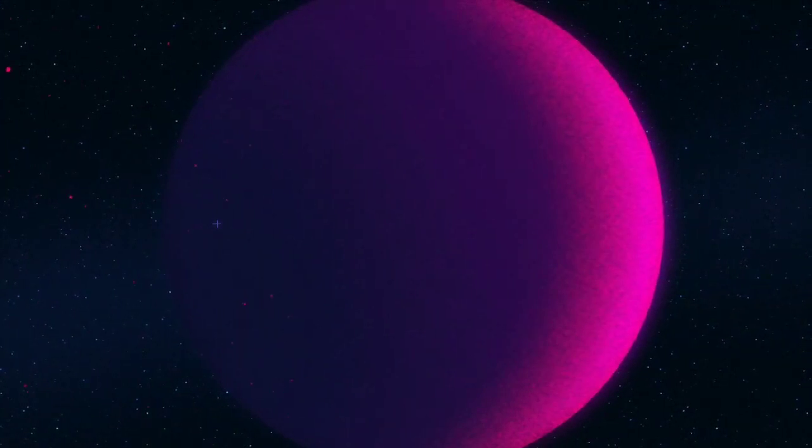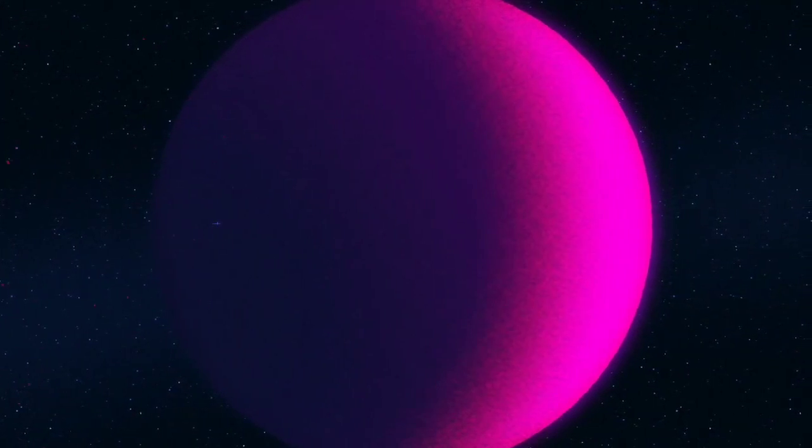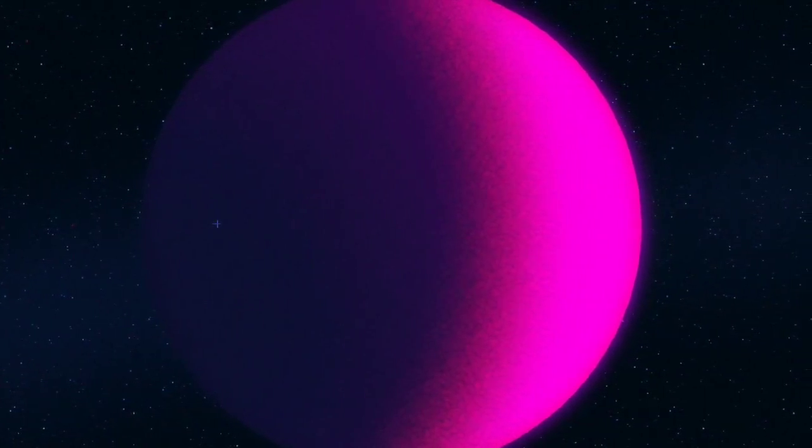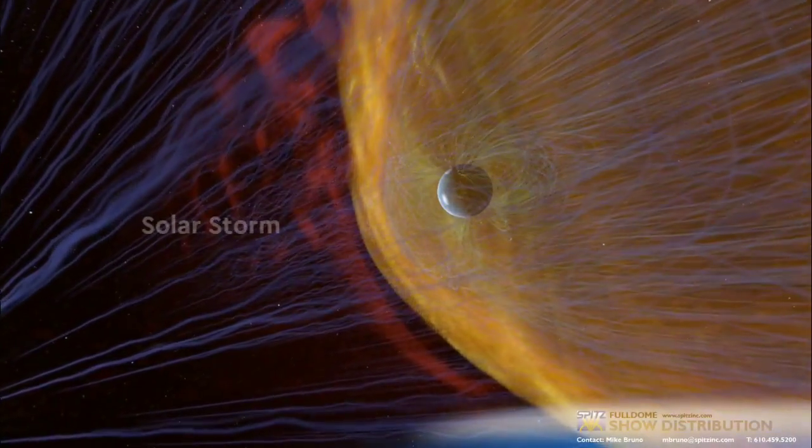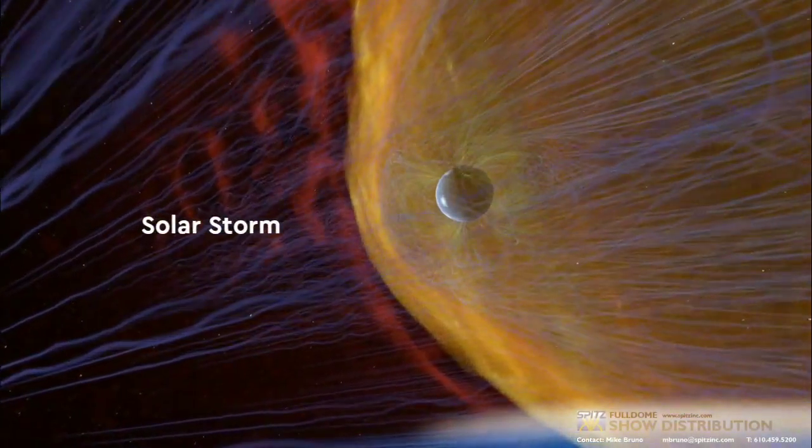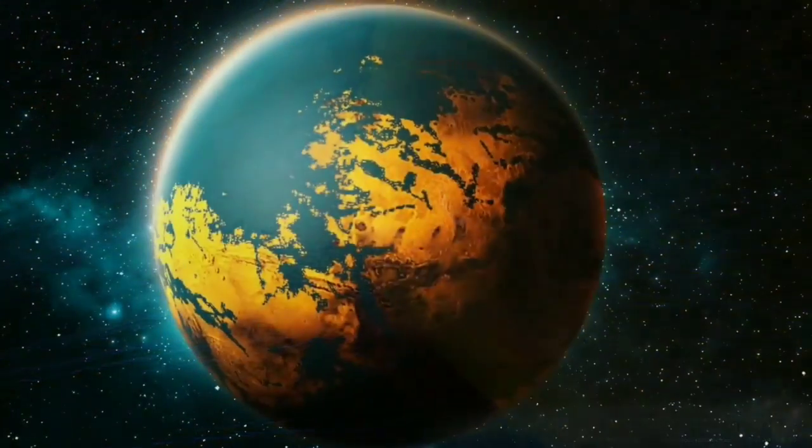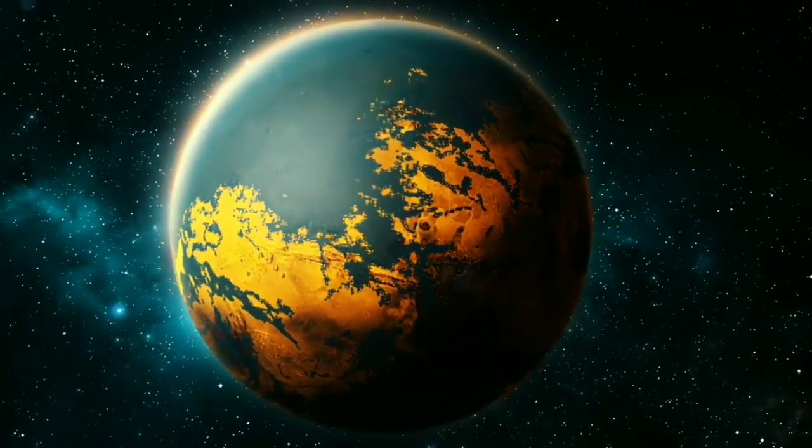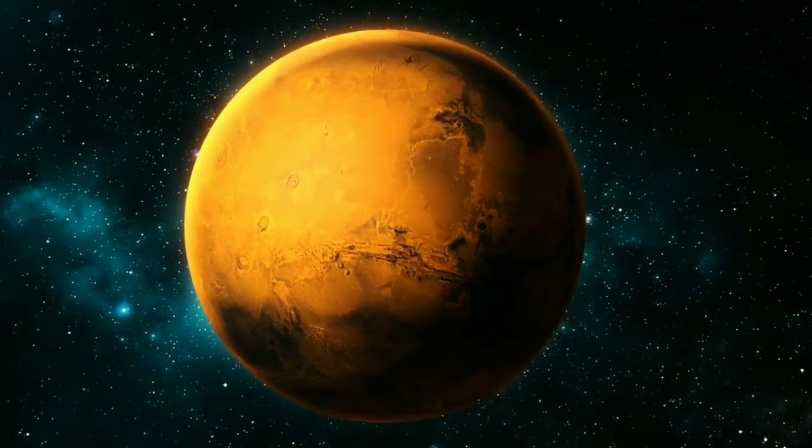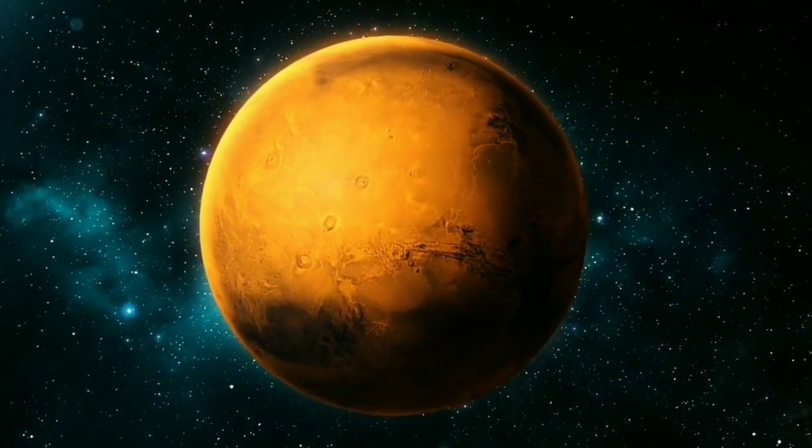Mars probably didn't remain habitable for very long though. The red planet lost its magnetic field sometime between 3 to 4 billion years ago, which allowed the solar wind, an incessant stream of energetic particles coming from the sun, to strike and strip away most of the planet's atmosphere and surface water, turning Mars into the chilly desert we see today.